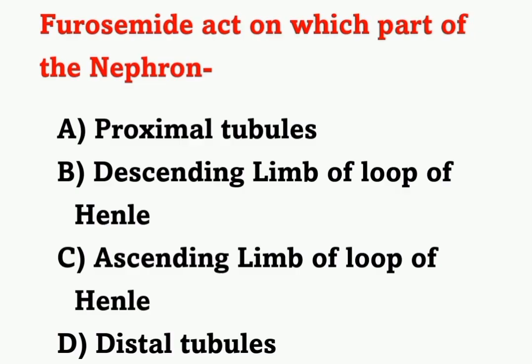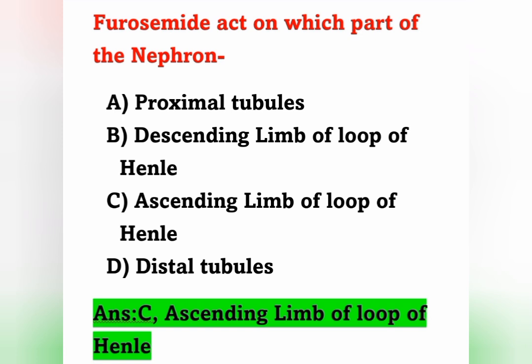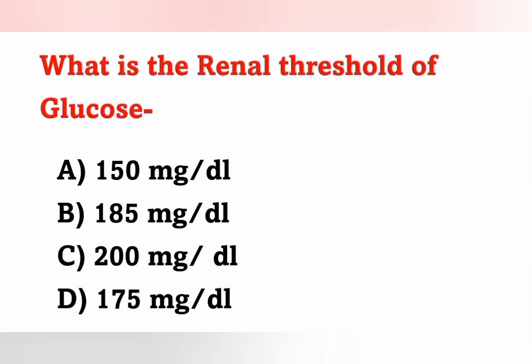First question: Furosemide acts on which part of the nephron? Options: A) Proximal tubules, B) Descending limb of loop of Henle, C) Ascending limb of loop of Henle, D) Distal tubules. Furosemide is an example of loop diuretics. It acts on the ascending limb of loop of Henle. Option C is the correct answer.